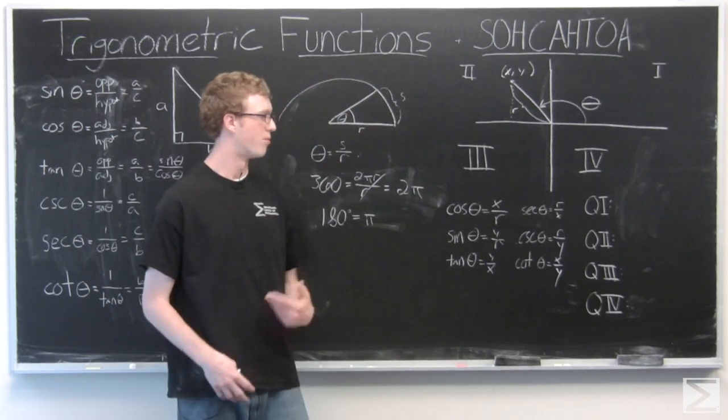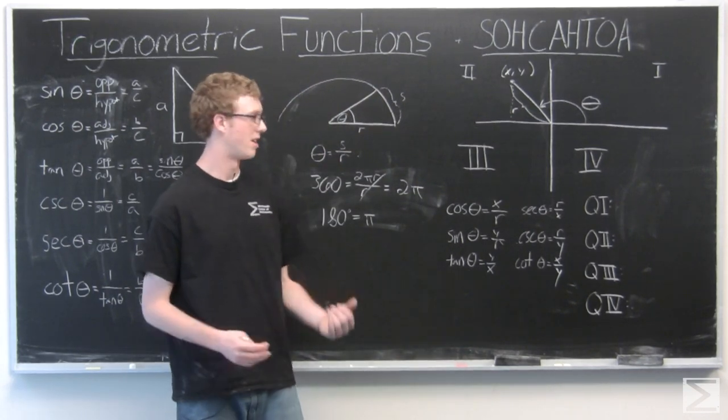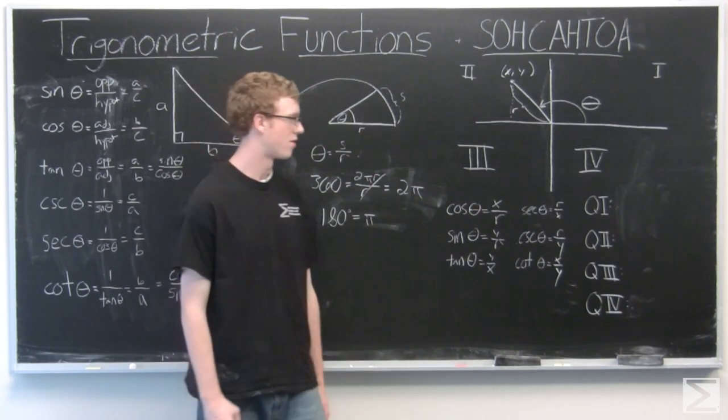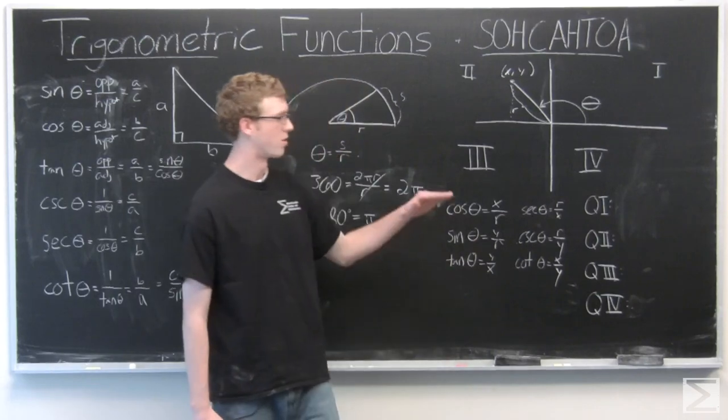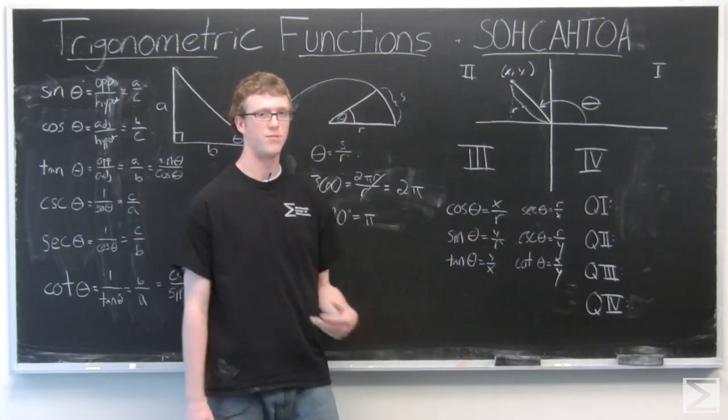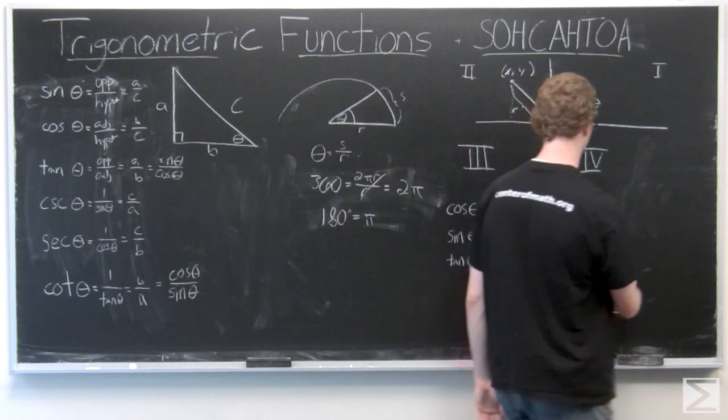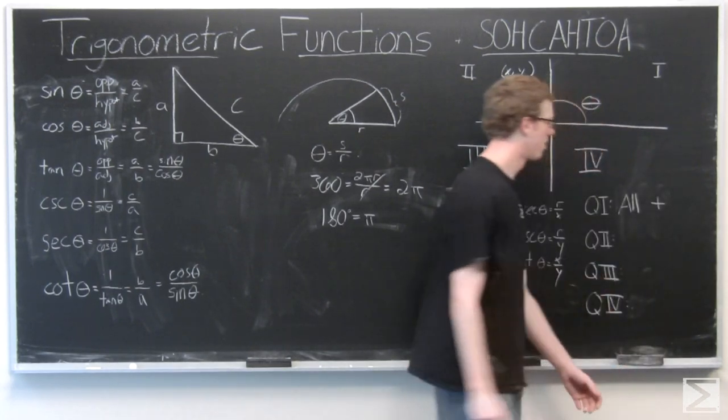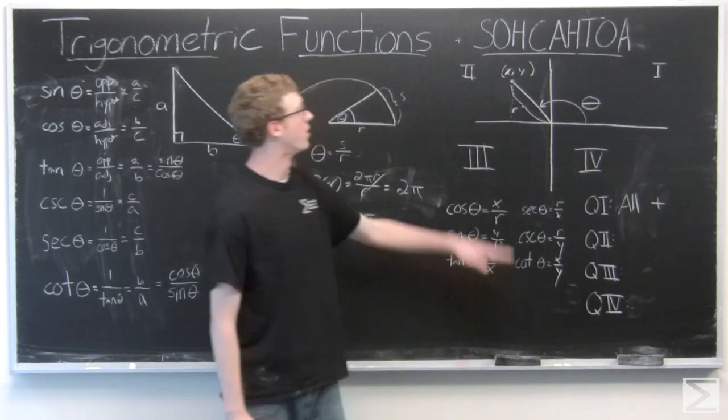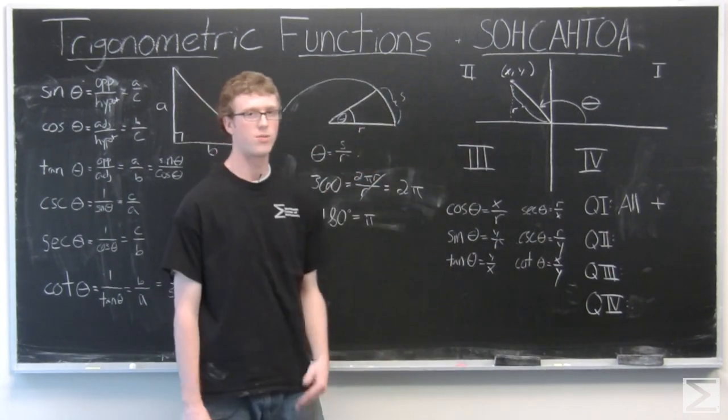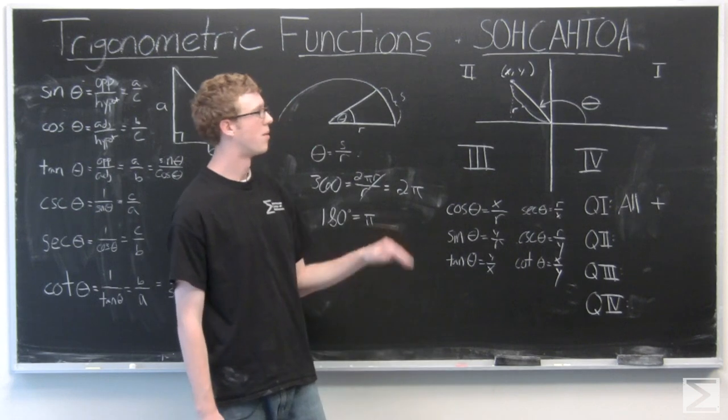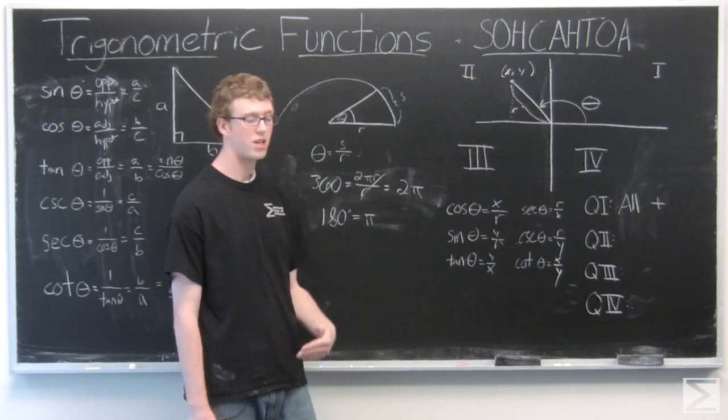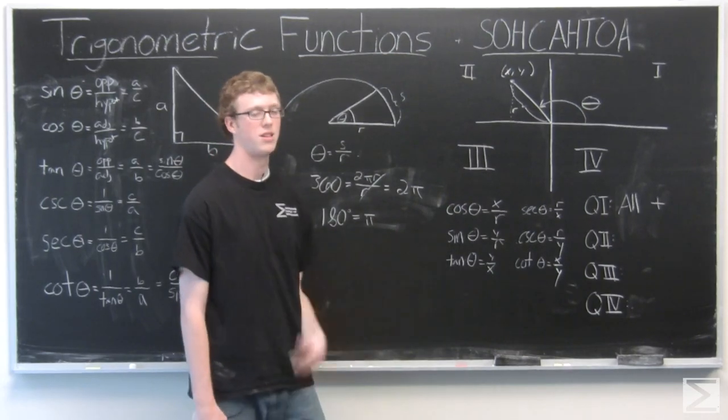So we can get an idea of where these are going to be positive and negative based on what quadrant they're in because the coordinates are going to change from positive or negative. So in quadrant one, everything is positive because the x and y values are always positive. I'm going to denote positive with a plus like that. So in the second quadrant, we have a negative x value, a positive y value. So that's going to make tangent negative, and it's going to make cosine negative, but sine is going to still be positive.